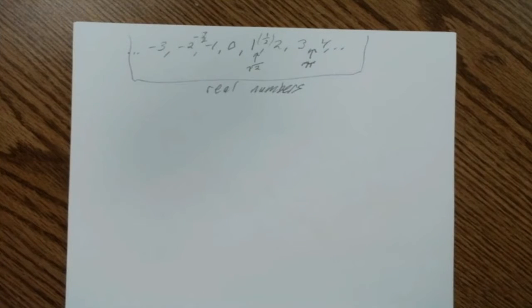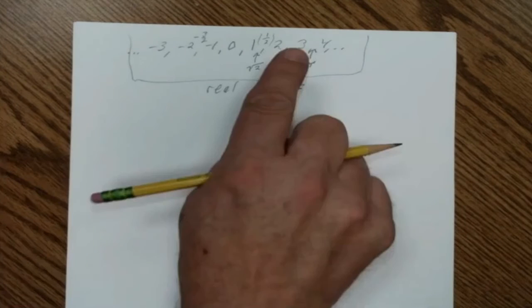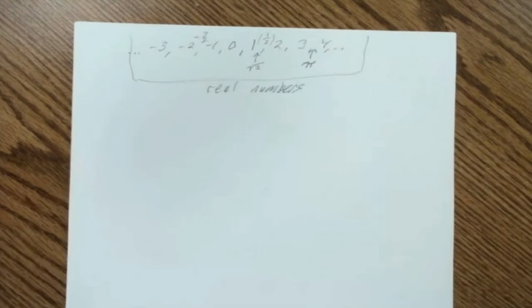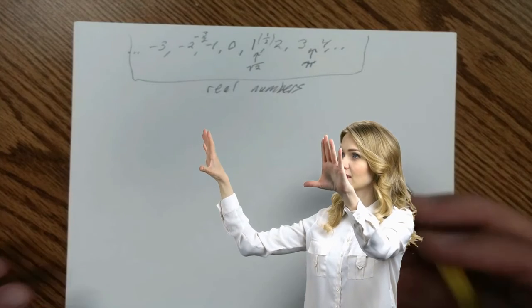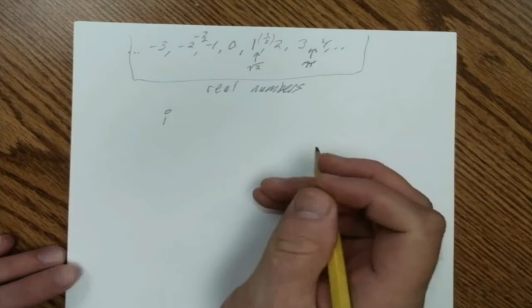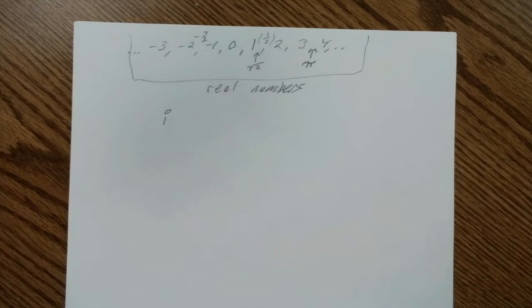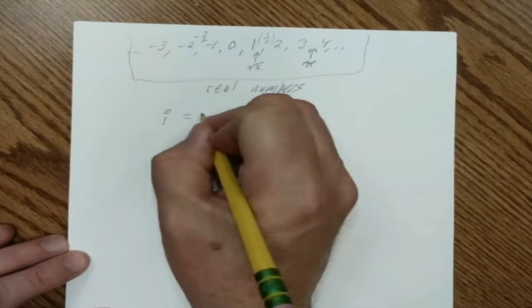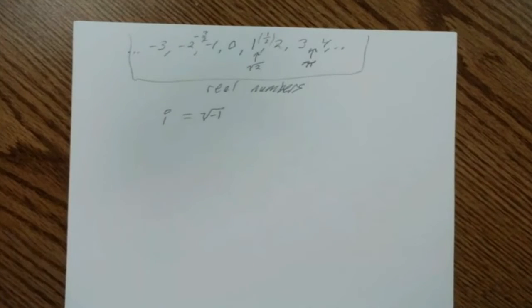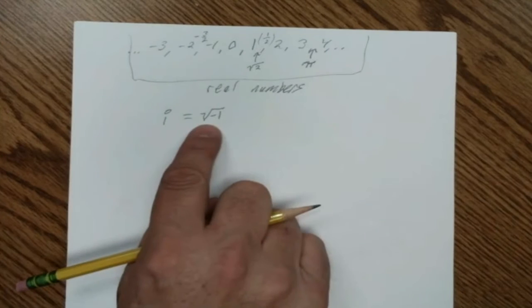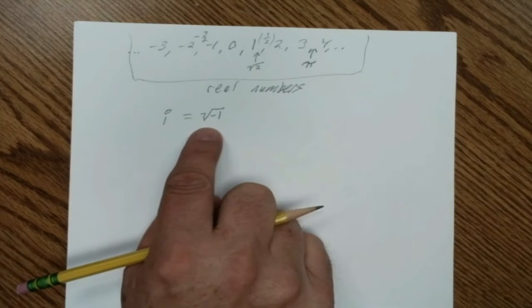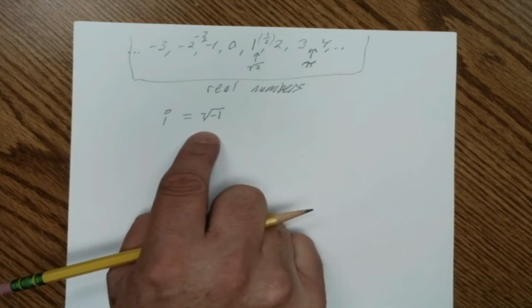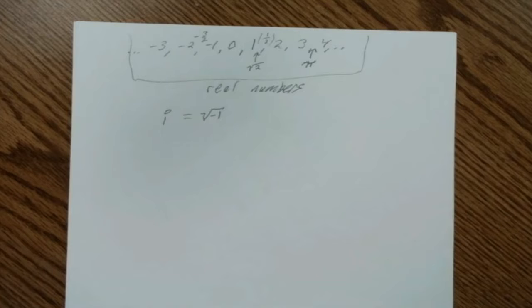We're going to expand a little bit outside of the real numbers now — outside of natural numbers, whole numbers, integers, rational, and irrational numbers — and talk about imaginary numbers. There's actually something outside of all the real numbers called imaginary numbers. The imaginary number we'll deal with is i. i is a number in mathematics and it has a value: it equals the square root of negative one. We've always said you cannot take the square root of a negative number, but now moving into higher mathematics we can do calculations with a negative square root, and we use the letter i to represent that.